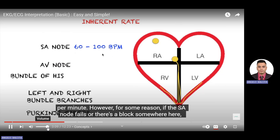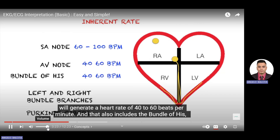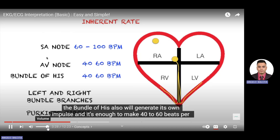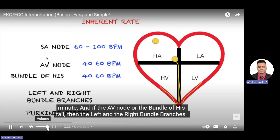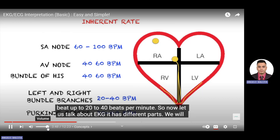However, if the SA node fails or there is a block, the AV node will kick in and generate its own impulse, producing a heart rate of 40 to 60 beats per minute — and that also includes the bundle of His. If the AV node or the bundle of His fail, then the left and right bundle branches and the Purkinje fibers will generate their own impulse, with the capacity to produce a heart rate of only 20 to 40 beats per minute.